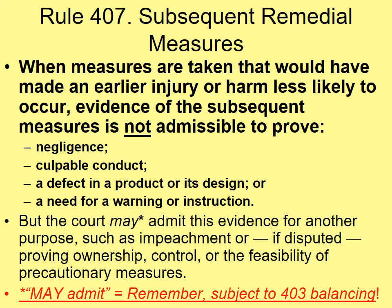However, the rule goes on to say the court may admit this evidence for another purpose — proving ownership, control, or the feasibility of precautionary measures. The asterisk by the word 'may' is a hint that Rule 403 balancing will come into play if evidence is potentially admissible for one of these other purposes. The majority of states have adopted rules based on Federal Rule 407, and even states without specific evidence codes follow the same basic policy.